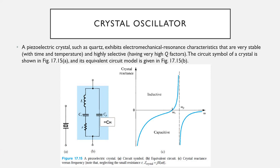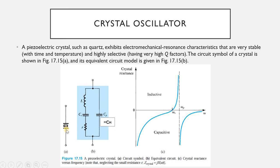Regarding the construction details of the quartz crystal: it is a hexagonal prism, but for practical use it is cut to a rectangular slab. As shown in the figure, it is cut into a rectangular piece or slab. This slab is then mounted between two metal plates, called holding plates, as they hold the crystal slab between them.